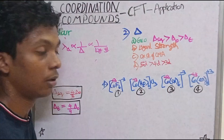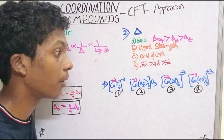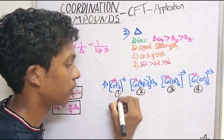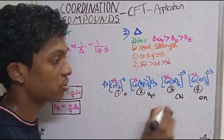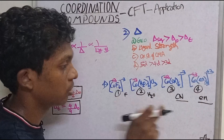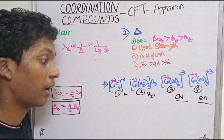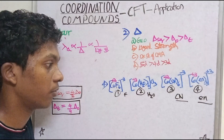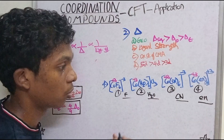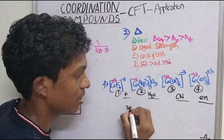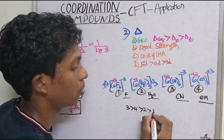The ligands being compared are: Fluorine (F⁻), Water (H₂O), Cyanide (CN⁻), and Ethylenediamine (en). Strong ligands give higher splitting energy, so shorter lambda-a. The ligand strength order is: CN⁻ > en > H₂O > F⁻. So compound 3 (CN⁻) is strongest, compound 4 (en) is second, compound 2 (H₂O) is third, and compound 1 (F⁻) is weakest.